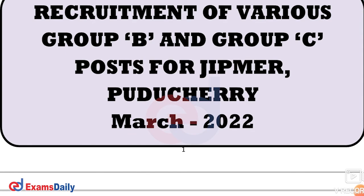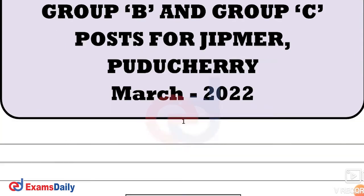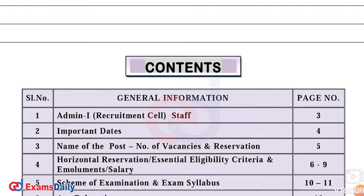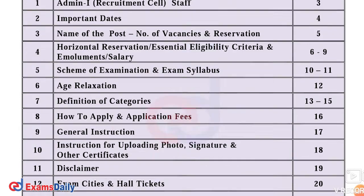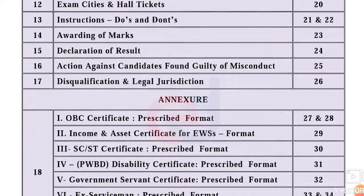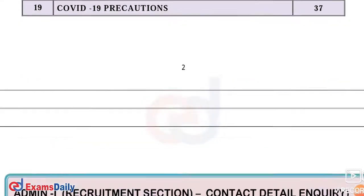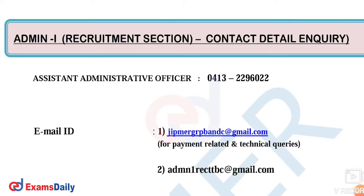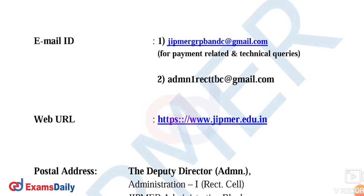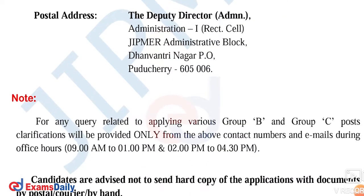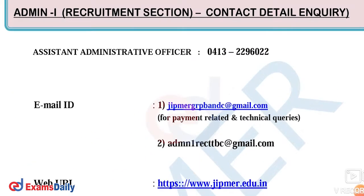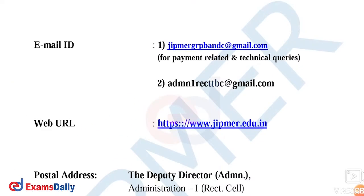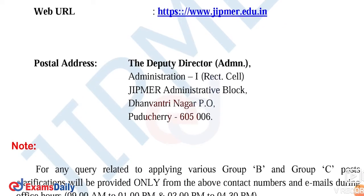First of all, there is a post — Group B and Group C. The post names are listed and you can go through them. This covers the experience, and you can also apply for the post and view the application details.